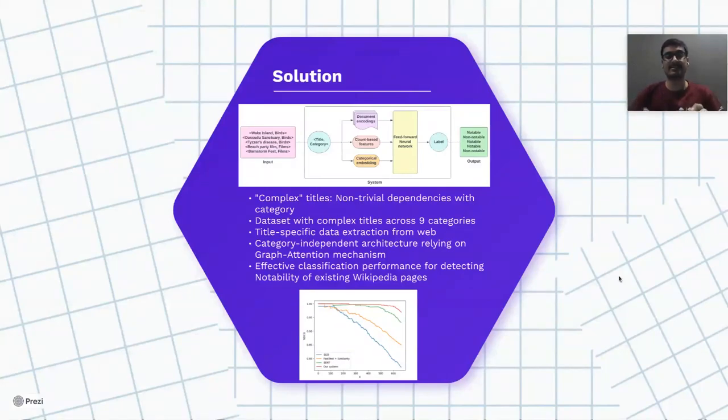As you can see in the system diagram on the top, the input is a title and its corresponding category and the final label is whether that title is notable or not. We have observed that our system has achieved effective performance for detecting notability of existing Wikipedia pages.